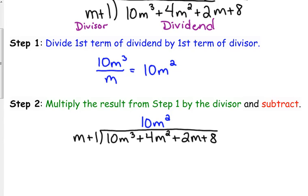Step two is to multiply that number, 10m², by the entire divisor, and then we're going to subtract. So 10m² times m is 10m³. 10m² times 1 is 10m². And we're going to subtract. Now, this is where you have a little bit of a choice. Some people like to look at it as subtraction. Some people like to change all the signs and add. Whatever makes more sense to you, I don't care, just so you do it correctly. So 10 minus 10 is 0. That should always go away. 4 minus 10 is negative 6.